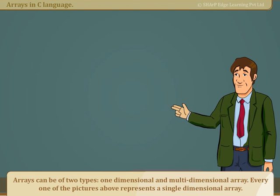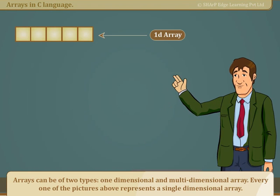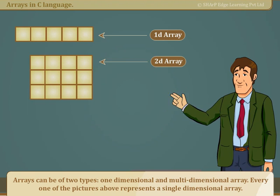Arrays can be of two types: one-dimensional and multi-dimensional array. Every one of the pictures above represents a single-dimensional array.